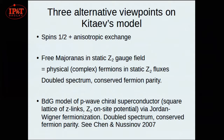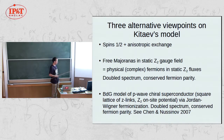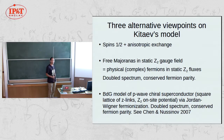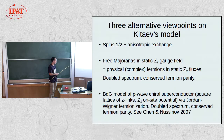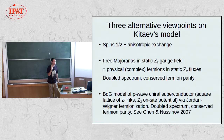There are three alternative viewpoints on the Kitaev model. First, the original spin language. Second, the transformed problem of non-interacting Majoranas in a static Z2 gauge field — where the spectrum is doubled and fermion parity is conserved. Third, a Jordan-Wigner transformation giving a Bogoliubov-de Gennes Hamiltonian for p-wave chiral superconductors — also showing a double spectrum and conserved fermion parity, meaning no well-defined number of fermions but a well-defined parity.